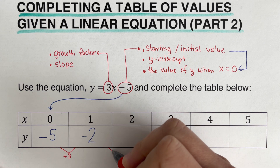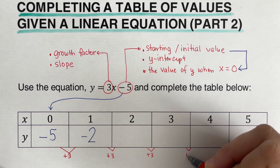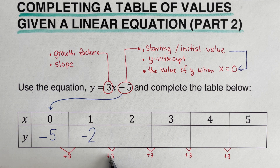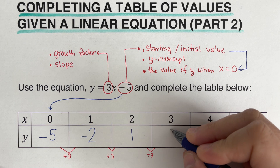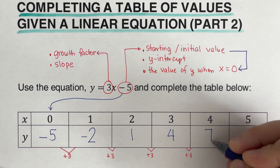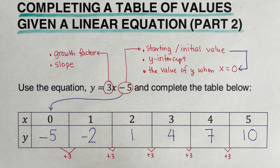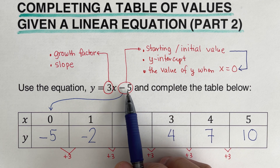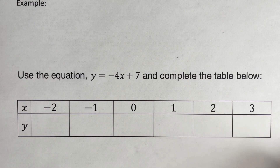The growth factor of plus 3 applies to each step. So: negative 2 plus 3 is positive 1, then 1 plus 3 is 4, then 4 plus 3 is 7, and 7 plus 3 is 10. We have completed the table using the growth factor (slope) and the y-intercept (starting value). I encourage you to pause and try the next problem on your own, then check your answer.